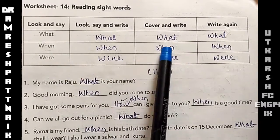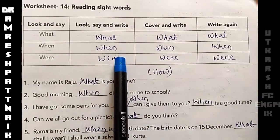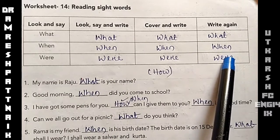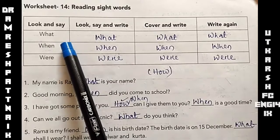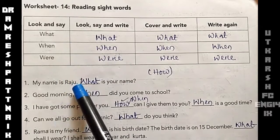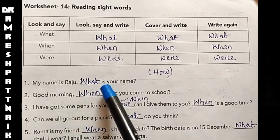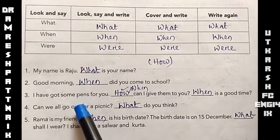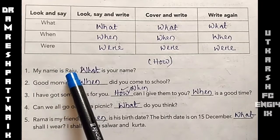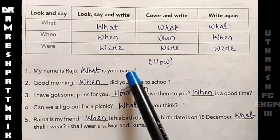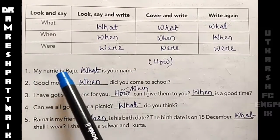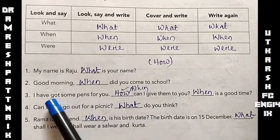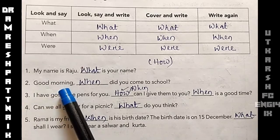By using these three words — what, when, where — we can fill in the blanks. So let's start. The first one: my name is Raju. What is your name? Number two: good morning. What is your name? My name is Raju.